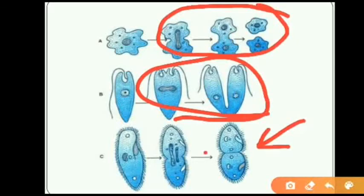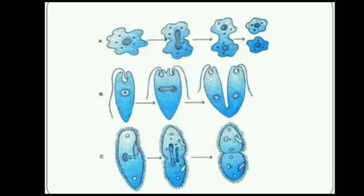In paramecium, the new daughter organisms are transversally divided. In euglena, the new daughter cells are longitudinally divided. In amoeba, new organisms are divided irregularly. So we have seen the different types of binary fission.